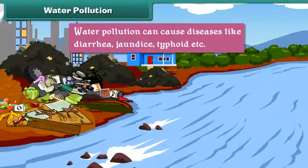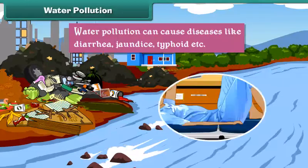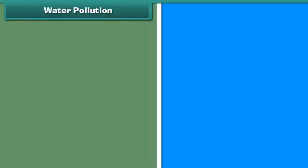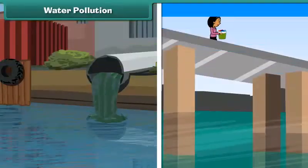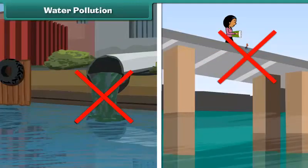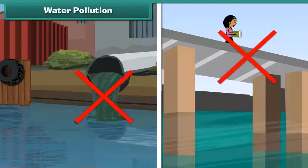Water pollution can cause diseases like diarrhea, jaundice, typhoid, etc. We can reduce water pollution by preventing disposal of waste into water.